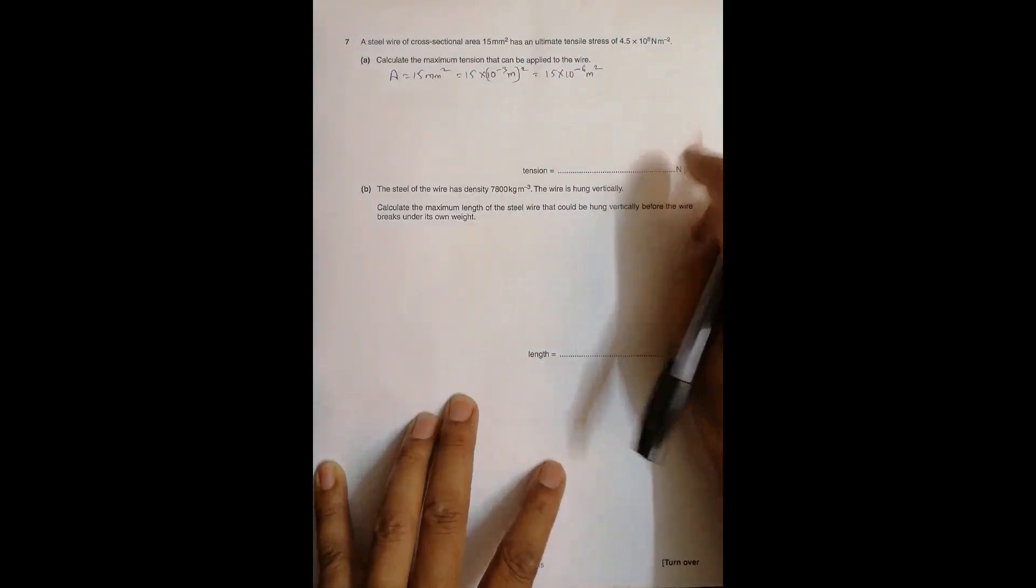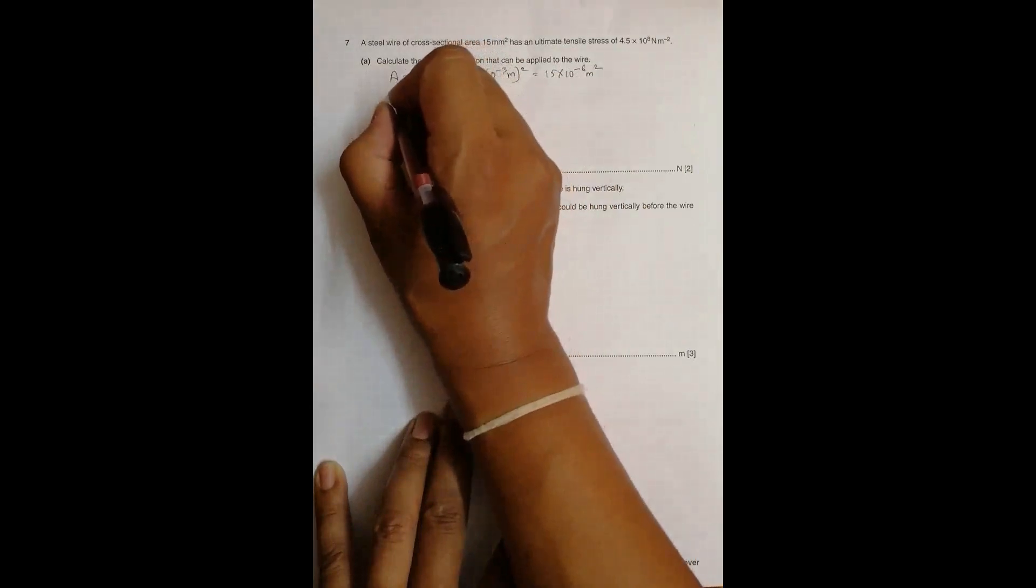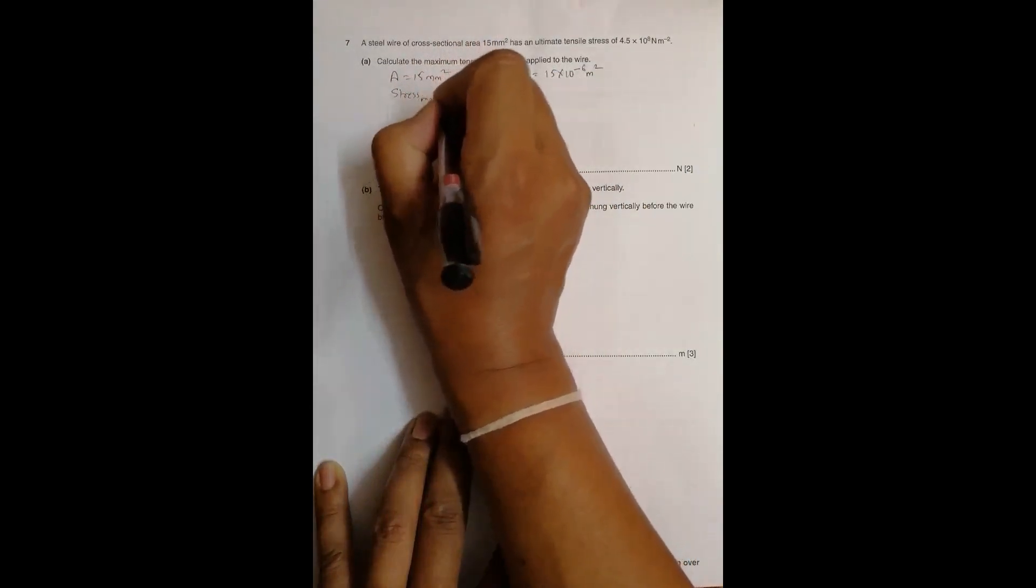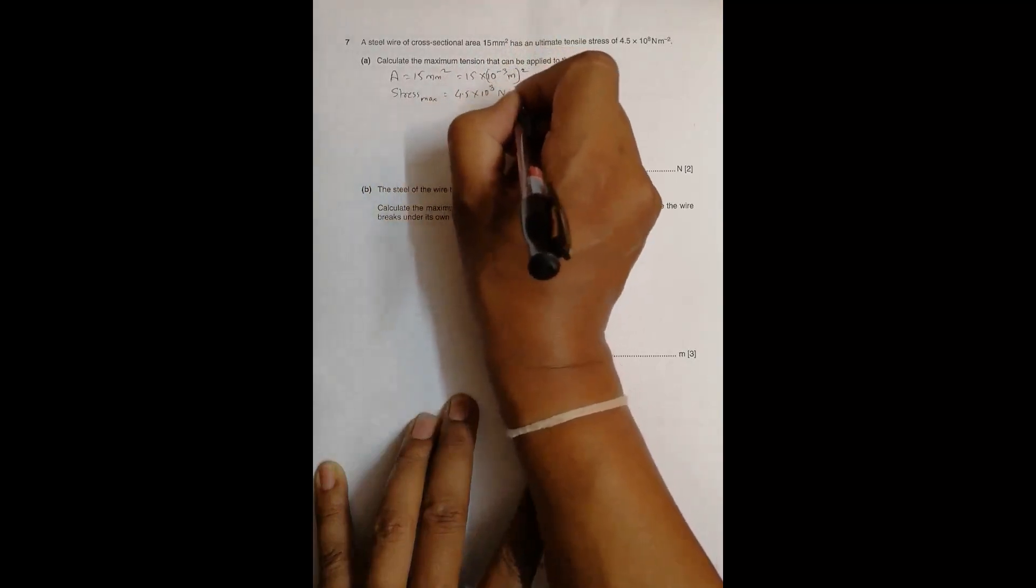The wire has an ultimate tensile stress of 4.5 times 10 to the power 8 Newton per meter squared. So we have stress max equal to 4.5 times 10 to the power 8 Newton per meter squared.